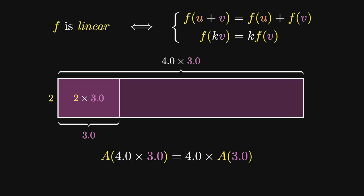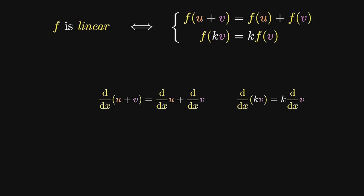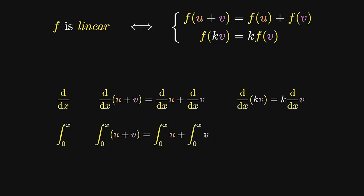These are precisely the two properties satisfied by taking derivatives. The derivative of a sum of functions is the sum of the respective derivatives. Furthermore, the derivative of the stretch of a function is precisely the stretch of the original derivative. In other words, taking derivatives is a linear transformation. But the opposite of taking derivatives in calculus is taking integrals. In fact, the first property gives us a partial proof that the integral of a sum of two functions is the sum of the integrals of the respective functions. Likewise, when we take the integral of the stretch of an original function, we can pull out the stretch and multiply it with the integral of the original function.